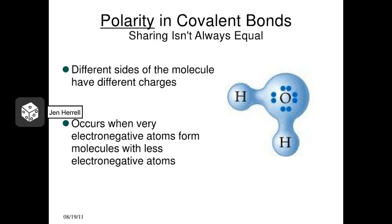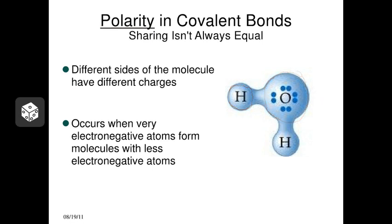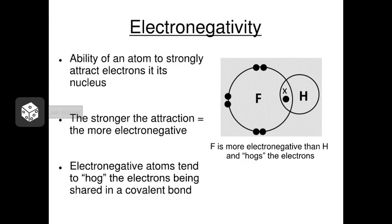Covalent bonds can result in something known as polarity, which results from an unequal sharing of electrons. Polarity occurs when you have a very electronegative atom sharing electrons with atoms that are not very electronegative. Electronegativity refers to an atom's ability to attract electrons very strongly. Fluorine, for instance, is very electronegative — it really attracts electrons strongly. Hydrogen, on the other hand, is not very electronegative. In general, the larger an atom is, the more electronegative it is, although there are exceptions.